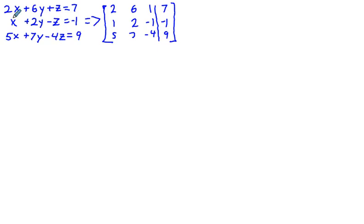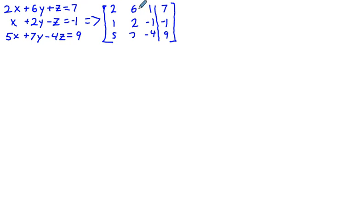In Gauss-Jordan elimination, we take the original system of equations and rewrite a matrix using just the coefficients. So 2x plus 6y plus z equals 7 becomes 2, 6, 1, and 7, and so on.